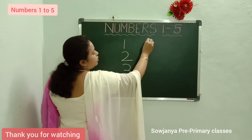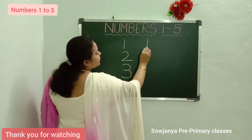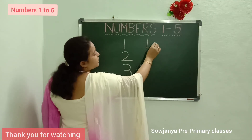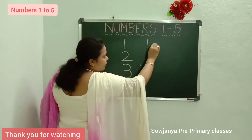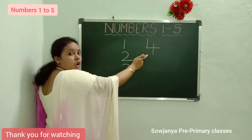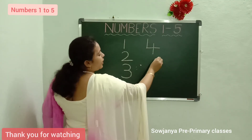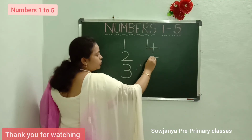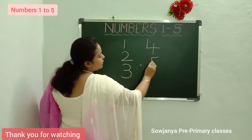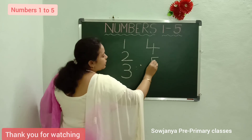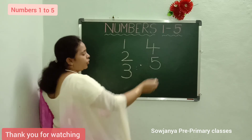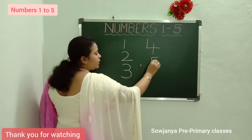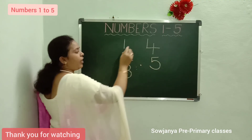How to write 4? Standing line, sleeping line. Right in the middle of the sleeping line, one standing line. 4. How to write 5? Sleeping line, from right to left. Small standing line. And left curve. 5. Sleeping line. Standing line. Left curve. 5.